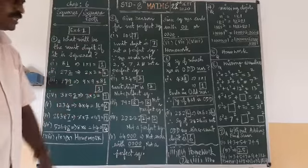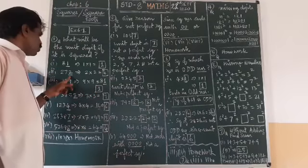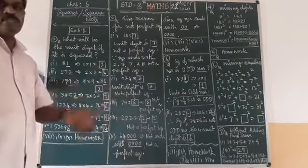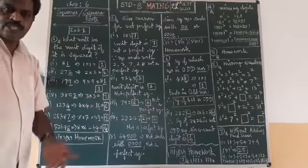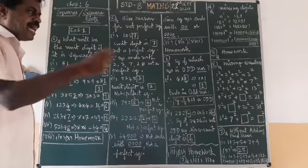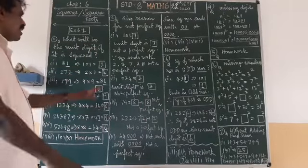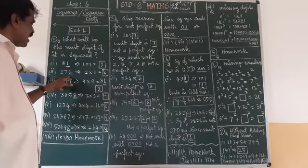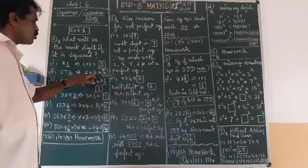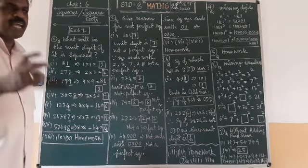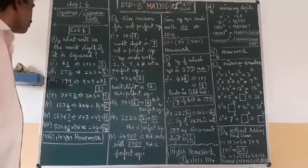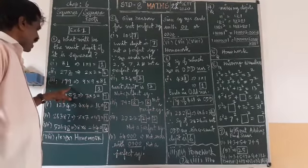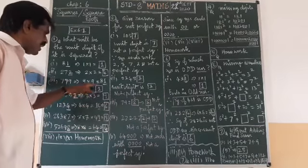For 272: if you multiply 272 two times, the last digit is 2. Take 2 into 2, which is 4. So your answer ends with 4. For 799: the last digit is 9. Take 9 into 9, which is 81. So your answer will be ending with 1 as the unit digit.